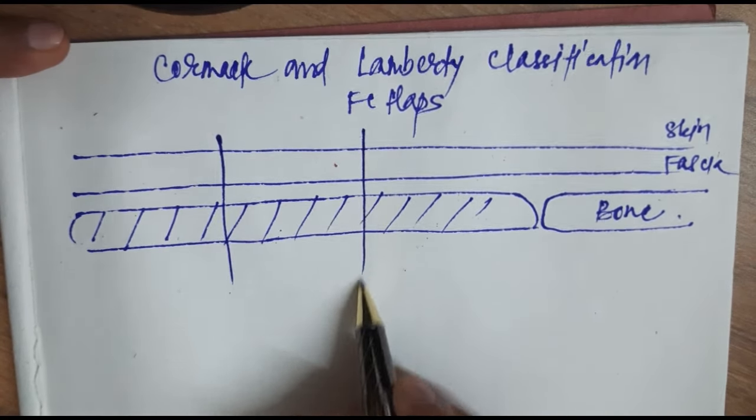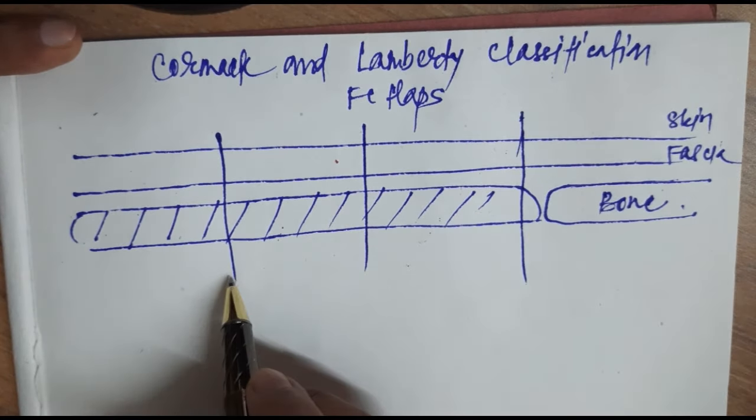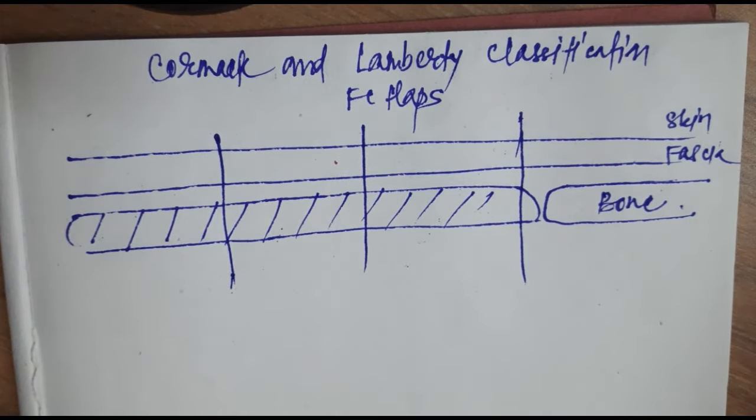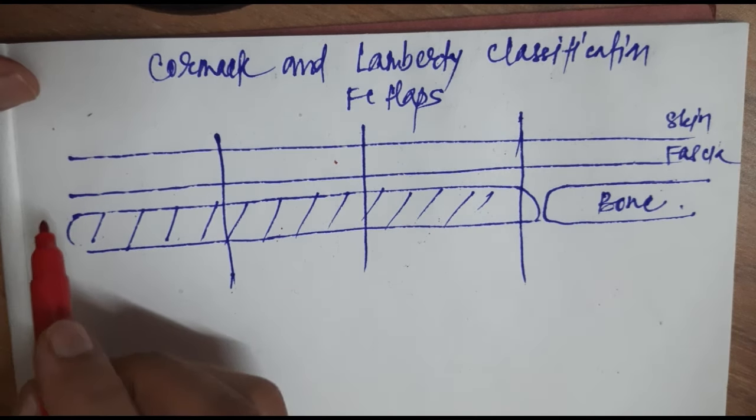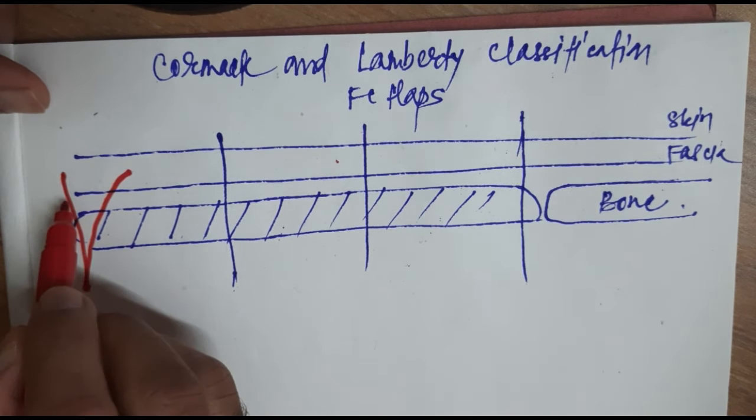This is for A, this is for B, this is for C, and this is for D. So type A, type B, type C, and type D.